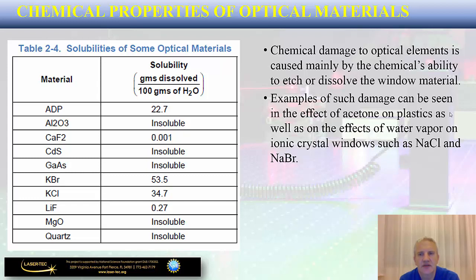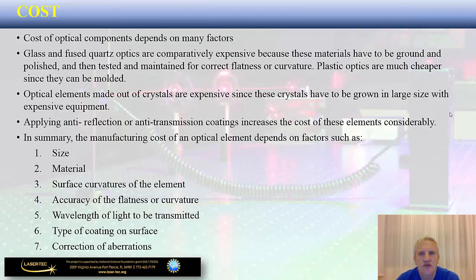If you are using certain chemicals for different experimentations, you have to pay close attention to what effect those chemicals will have on different optical windows, prisms, lenses, and other materials you may be using in an optical lab. All of what we've discussed about optical materials will have a significant impact on your decision when you are tasked to select specific optical components for your optical system.